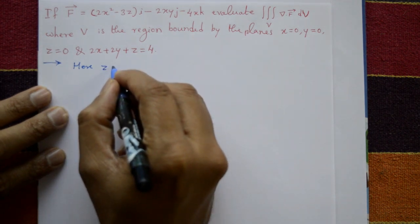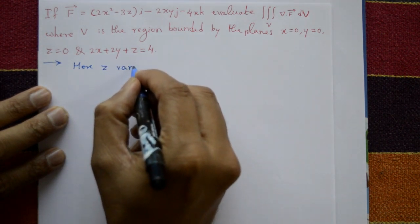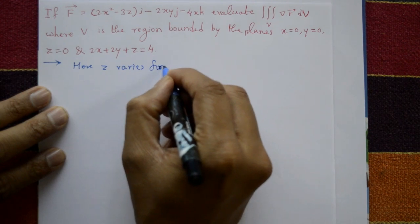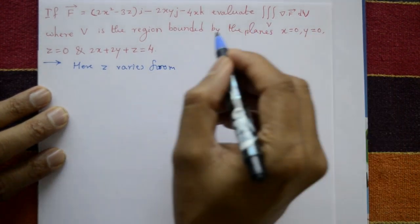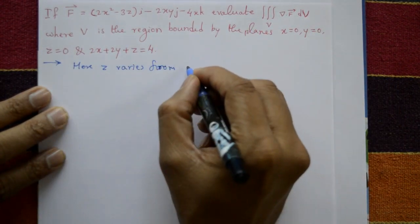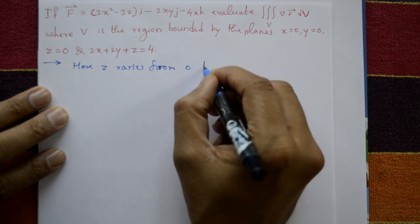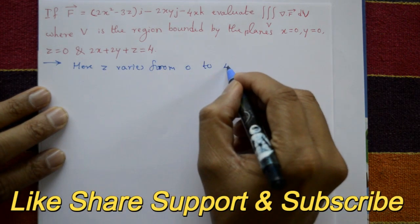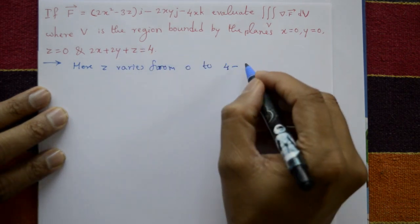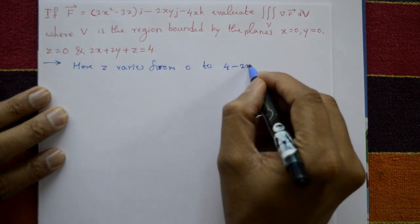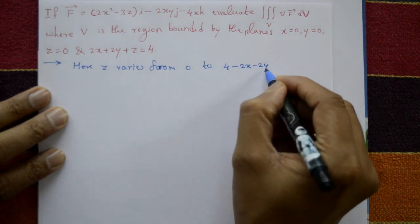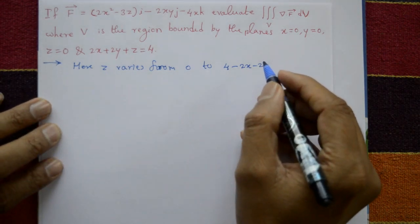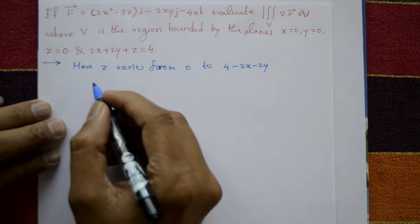First, z varies from z = 0 to — from the plane equation 2x + 2y + z = 4, shift the terms to the right-hand side — z varies from 0 to 4 - 2x - 2y.